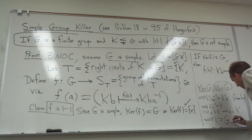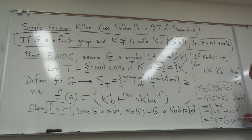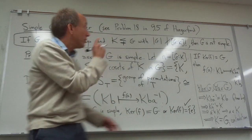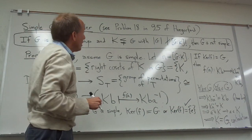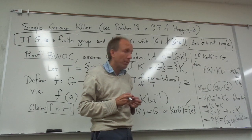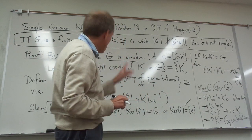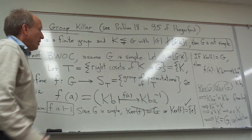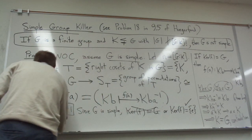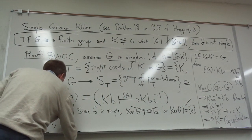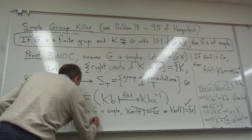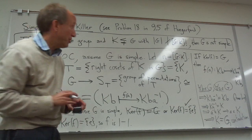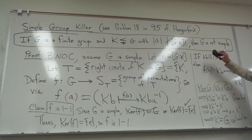This is a contradiction. This is quite a proof — it takes a little bit of work, but the payoff of being able to use this simple group killer in a lot of applications is worth going through it. We've shown that the kernel of F is not the whole group G. That means the kernel is equal to E. Thus, the kernel of F equals {e}, so F is one-to-one. We have a one-to-one homomorphism.